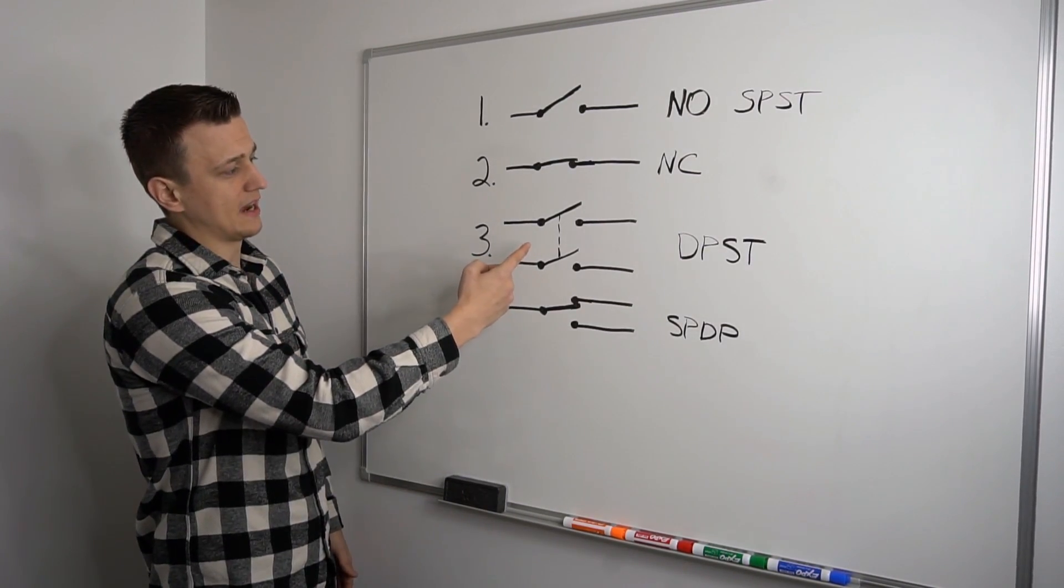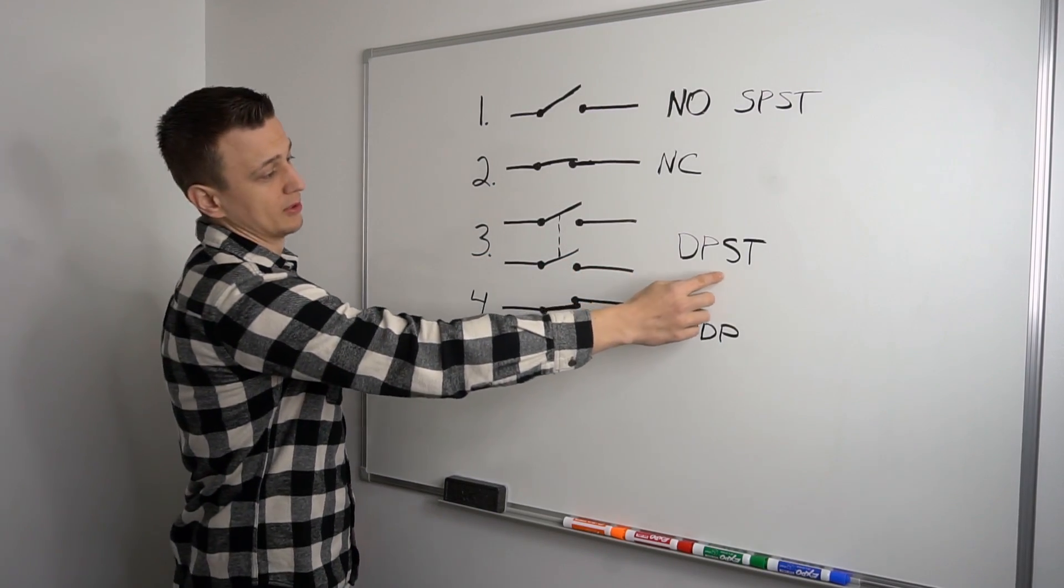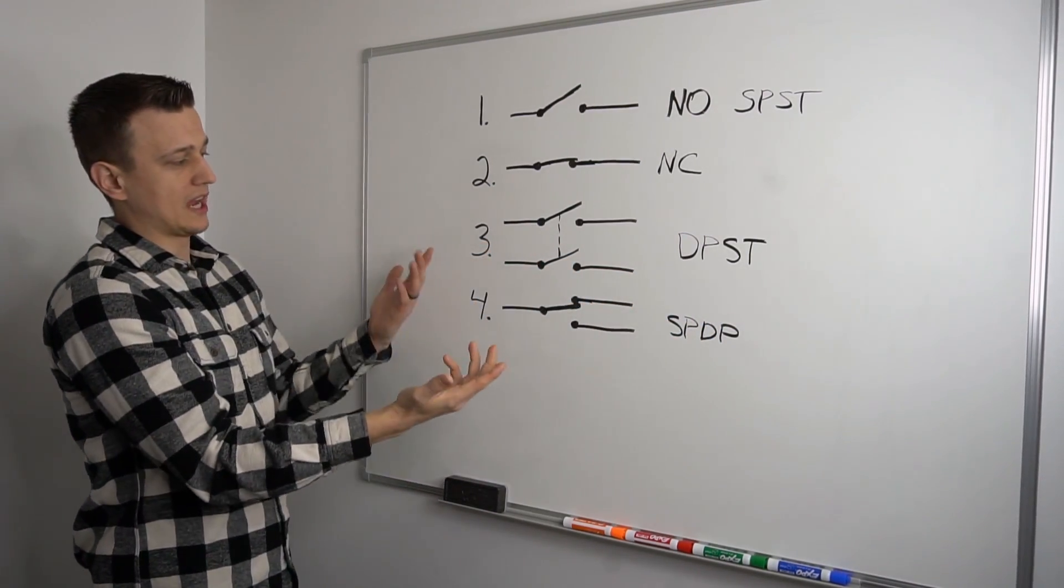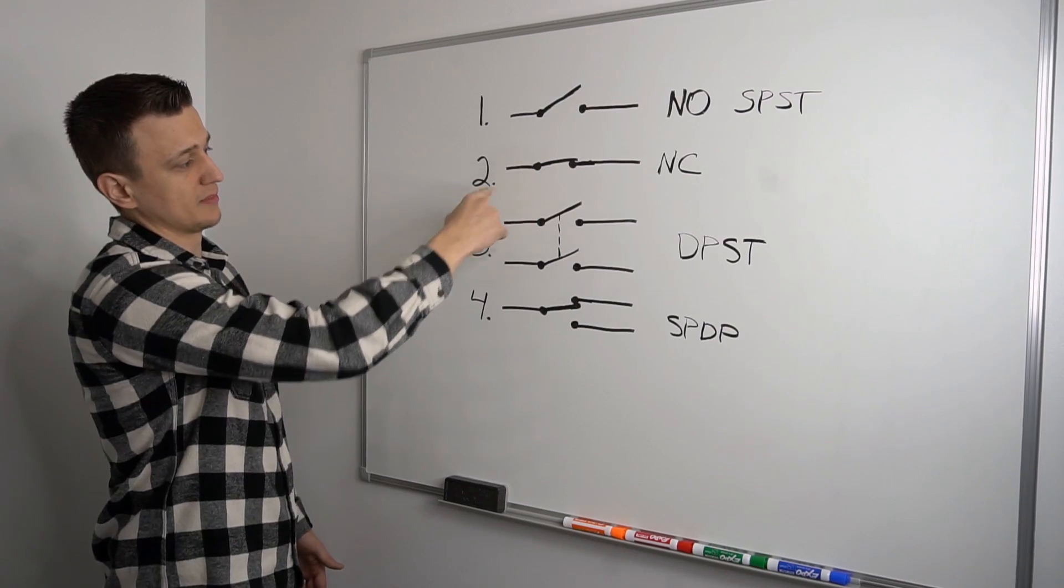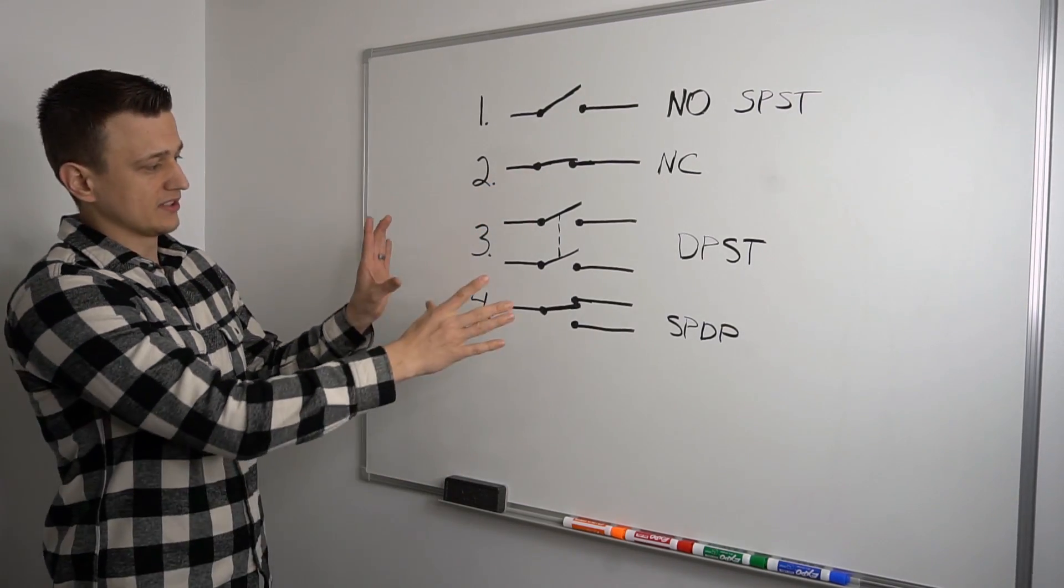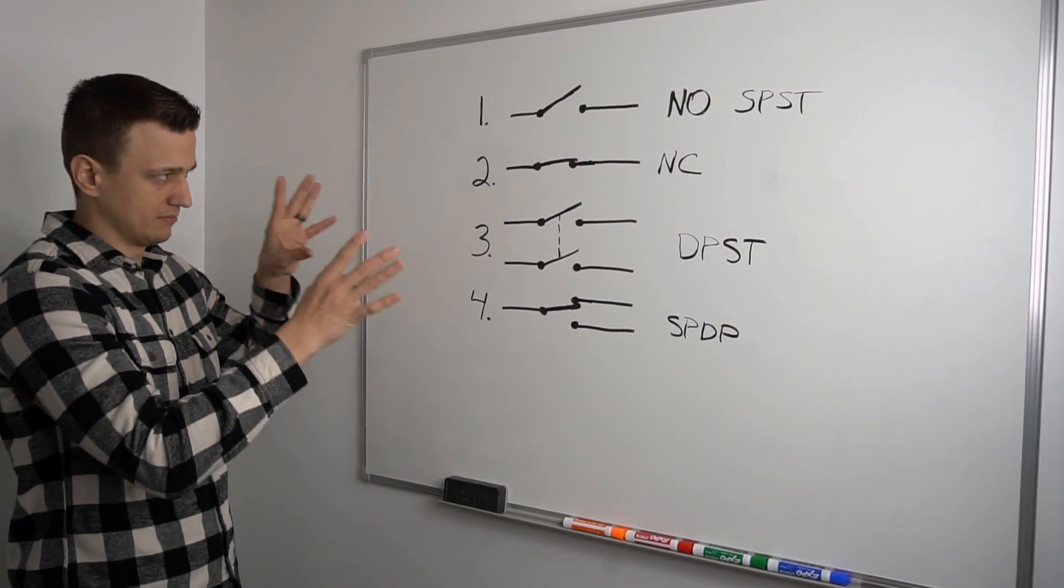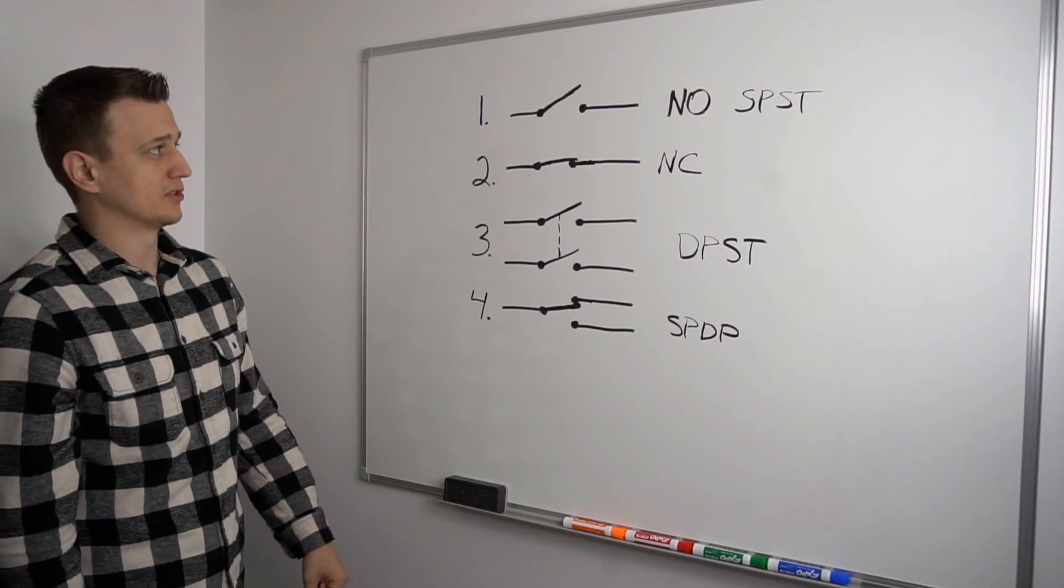These are just the basics that you're probably going to see the most often, but you can see some variations of this on some wiring diagrams as well. For example, you can have a double pole double throw, where it's not connected like that. Or you can have even a triple pole. But most commonly, these are the basic ones you'll see all the time.